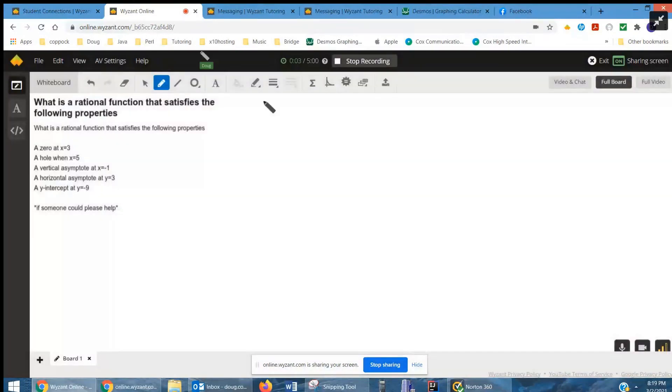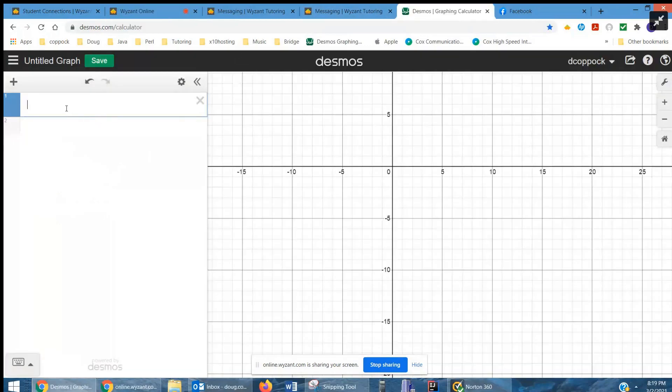I'm going to go to Desmos, online graphing calculator, and you can watch me build this rational function that satisfies these properties. So here I am on Desmos. The first condition was that there was a root or a zero at x equals 3, which means x minus 3 is a factor, and there's the root, 3, 0.